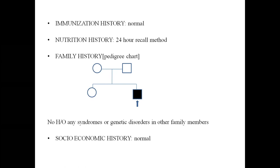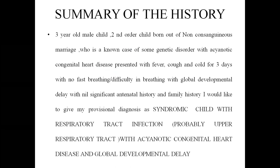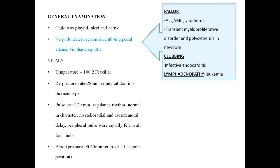Summary of history: three-year-old male child, second order, born out of non-consanguineous marriage, known case of some genetic disorder with acyanotic congenital heart disease, presented with fever, cough, cold for three days with no fast breathing or difficulty in breathing, with global developmental delay, nil significant antenatal history and family history. Provisional diagnosis: syndromic child with upper respiratory tract infection, acyanotic congenital heart disease, and global developmental delay.